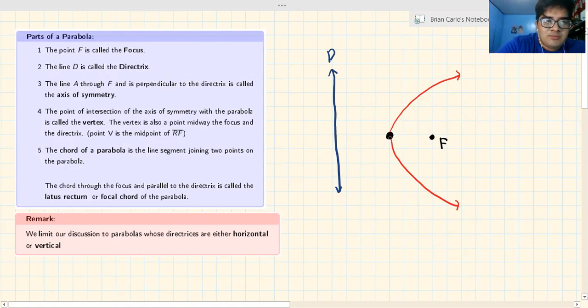We know the point F. The point F is called the focus. We know that from the start. The line D is called the directrix. We know that because the definition tells us.